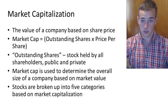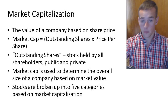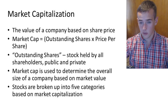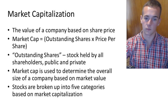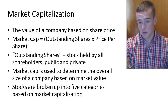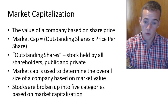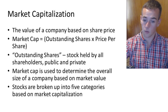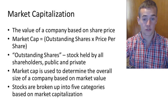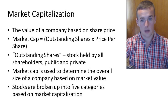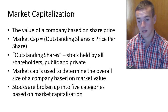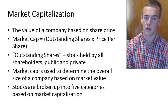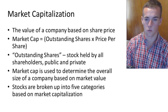Now we're going to talk about market capitalization. This is basically the value of a company based on share price. Market cap equals the outstanding shares — the total number of shares owned by both insider investors and public investors — times the price per share. Outstanding shares is the stock held by all shareholders, both public and private. Market cap is used to determine the overall size of a company based on market value. Stocks are broken up into five categories based on market capitalization.